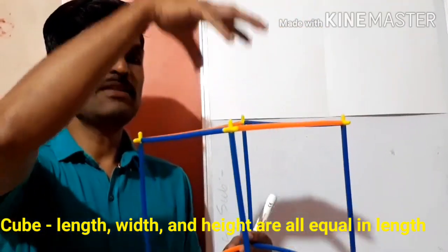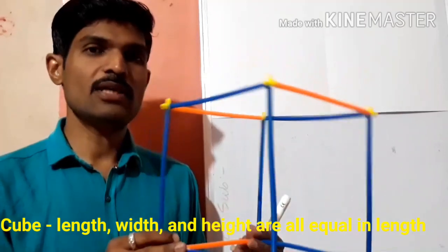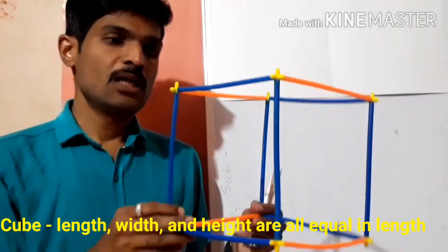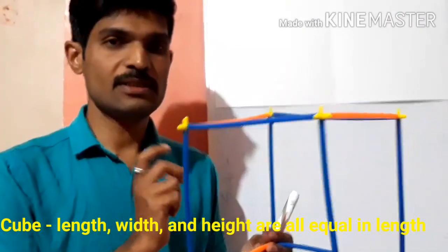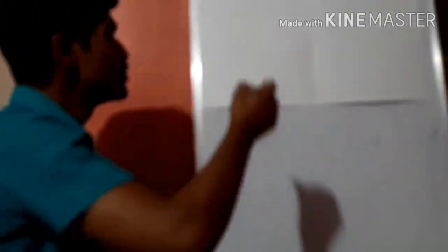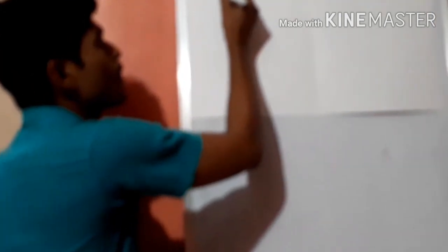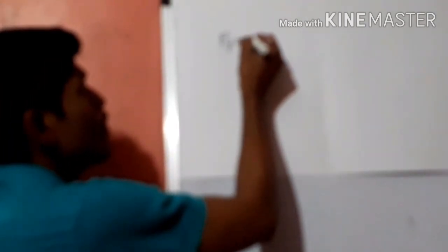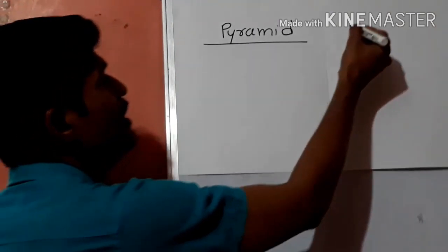A cube has length, breadth and height all equal. That's why we call it a cube. Now, there are two different types of three dimensional shapes: pyramid and prism.